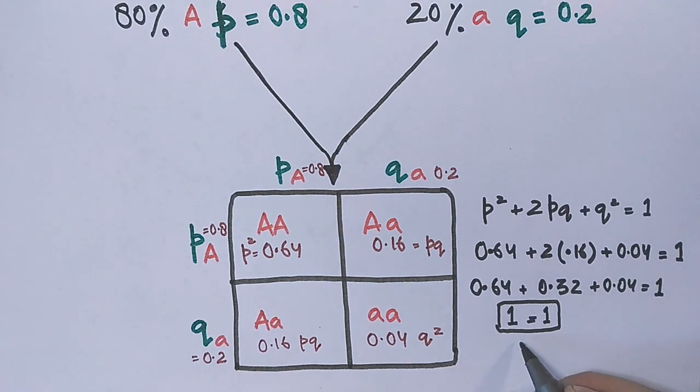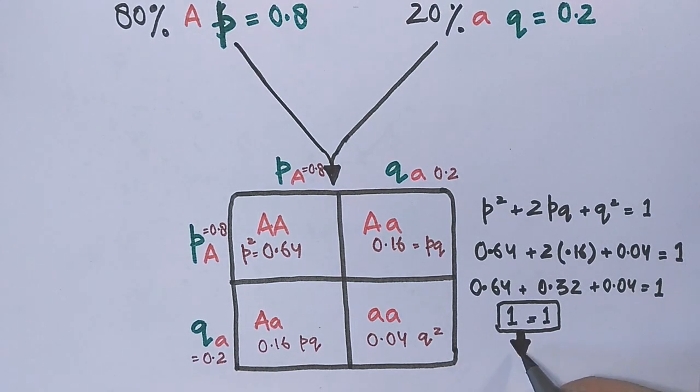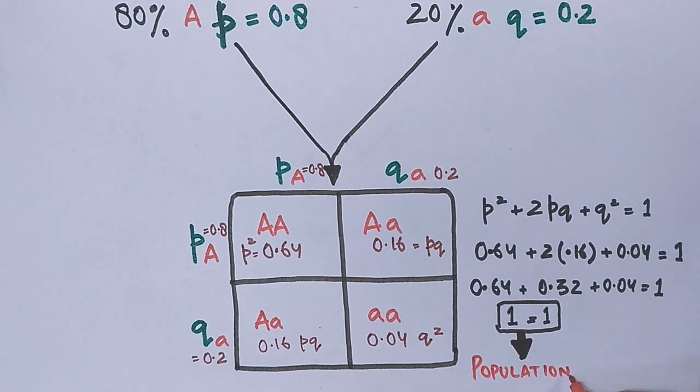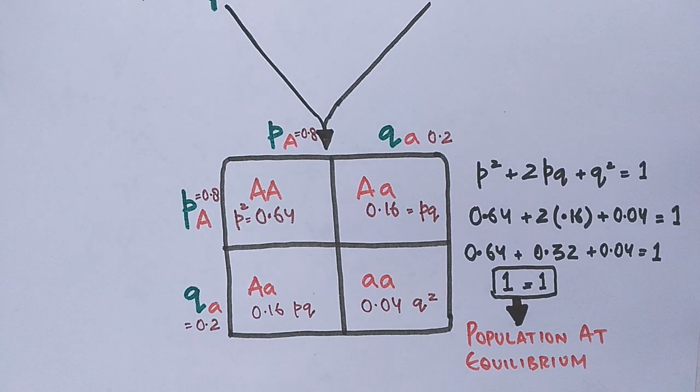It's from generation to generation that the frequency of alleles and genotypes remains the same when evolutionary forces are absent. This cross validates the Hardy-Weinberg principle.